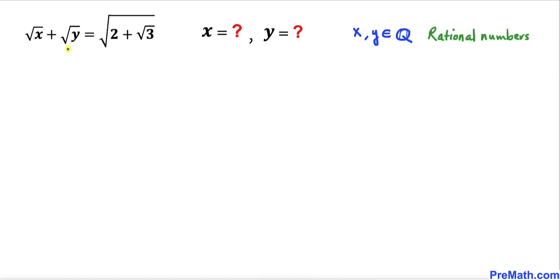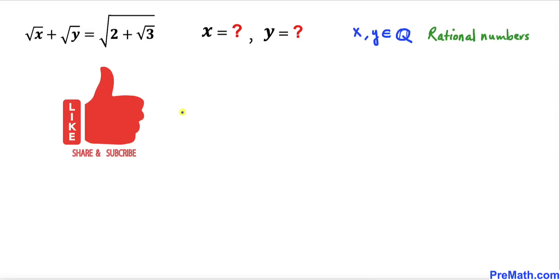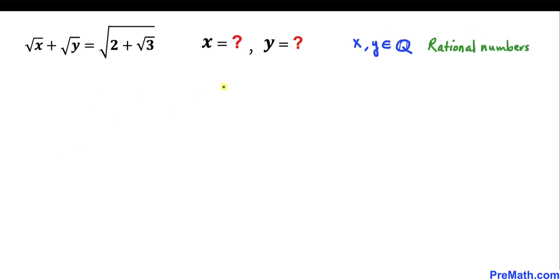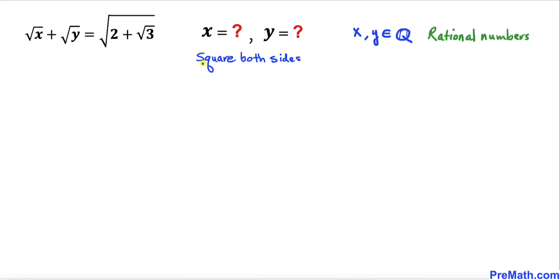Welcome to pre-math. In this video we have got this radical equation: square root of x plus square root of y equals square root of 2 plus square root of 3, and we are going to solve for x and y. So let's go ahead and get started with the solution.